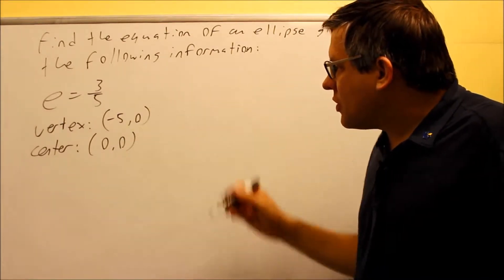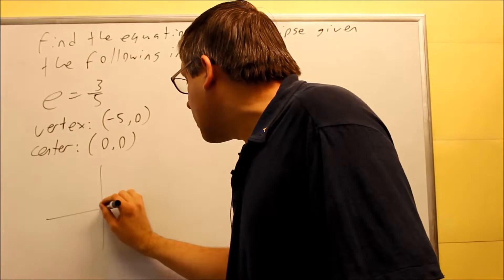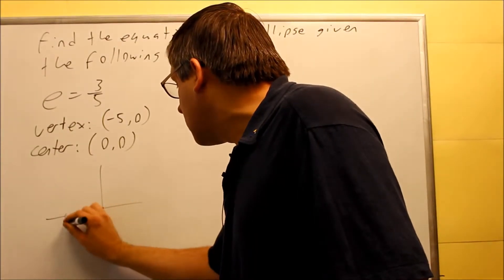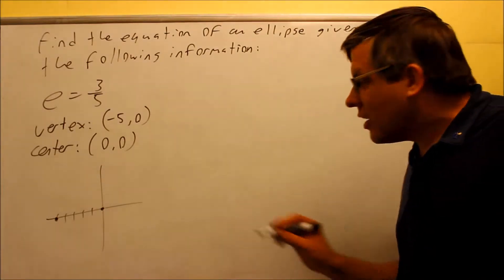Now, these two pieces of information, you want to first start by plotting those. So I have (0,0), and I have (-5,0). So those are the two pieces of information that's provided.